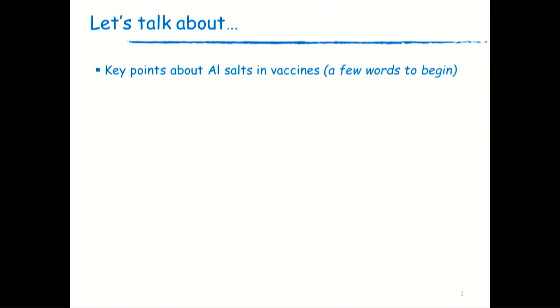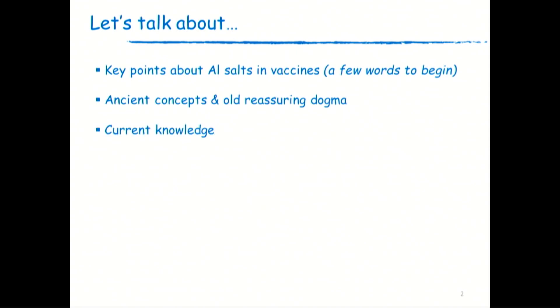Briefly, we will talk about some key points about aluminum salts in vaccines, then the ancient reassuring dogma, then the current knowledge, and I will finish with what we can do now and what we have to do now.